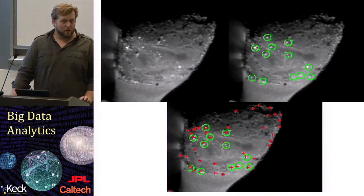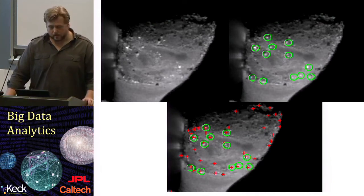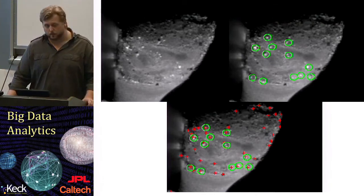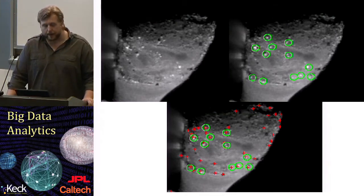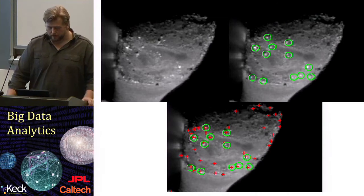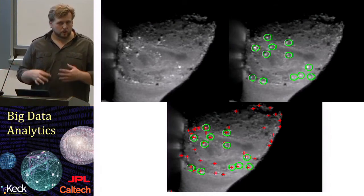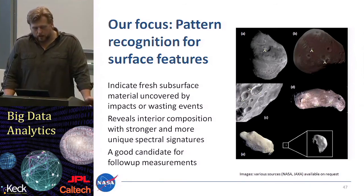Here we see images from Hartley-II, an active comet from a flyby mission. At the top left you see the original image. At the top right you see surface features marked by a domain expert — a planetary scientist marked the features of interest for, for example, spectrometer measurement. On the bottom image, red crosses show proposed detections by the algorithm, which most of the time hit the points of interest but have a lot of false positives. We want to use Random Forest as a classifier to weed out good detections from bad detections to increase the science return.